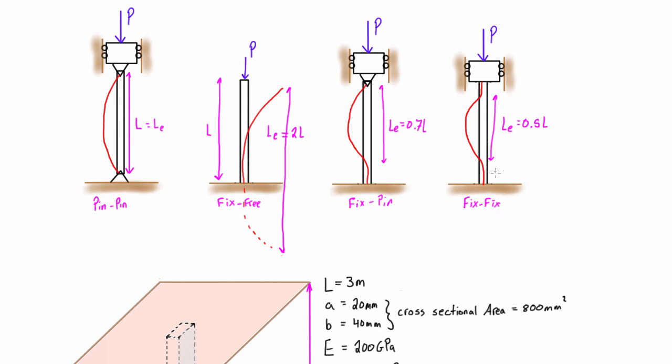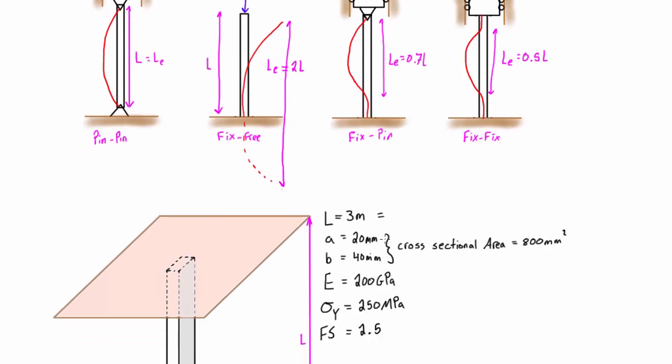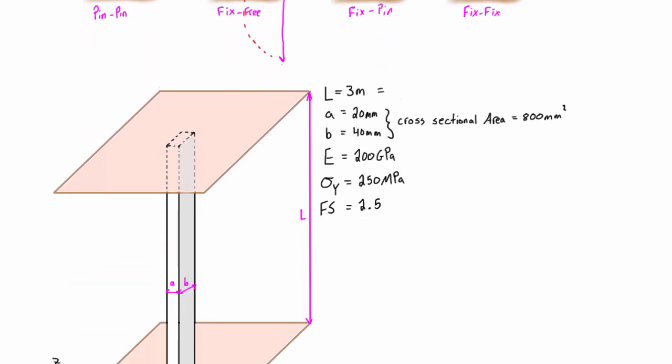This is the situation that we have here in this video. So we're saying that our effective length is going to be equal to 0.5 times the actual length. In this case, our actual length is 3 meters. So our effective length, maybe let's not draw an equal sign, let's draw an arrow. We have our effective length is going to be equal to 0.5L, so that's 1.5 meters.